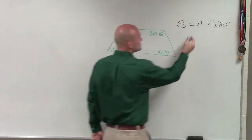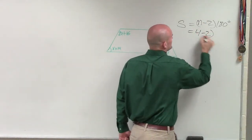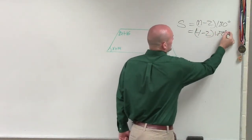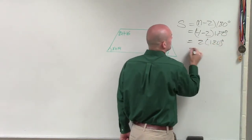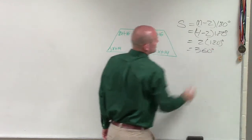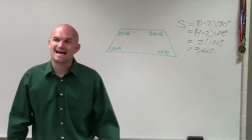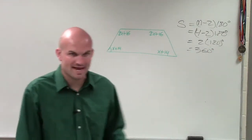So in this case, we have four sides. So it's 4 minus 2 times 180, which equals 2 times 180, which equals 360 degrees. So what that means is that's the sum of all of the angles.